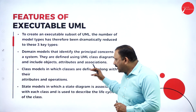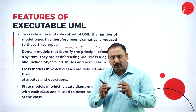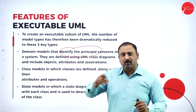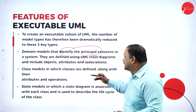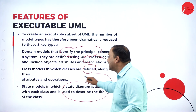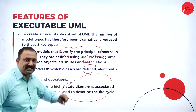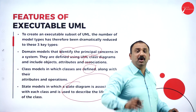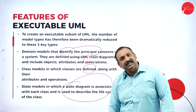There are three features of Executable UML. First, the domain model identifies the principal concerns of the system — whether finance, BFSI, utilities, or government — and these are defined by UML classes with their attributes and operations. Second, state models have a state diagram associated with each class, getting down to the domain-specific, class-specific, and state-specific level.